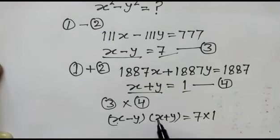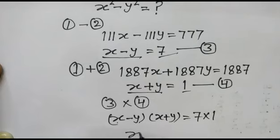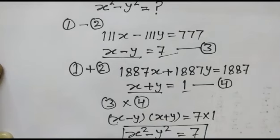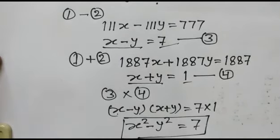x minus y times x plus y equals x squared minus y squared equals 7. So we have found the required result. Okay friends, thank you.